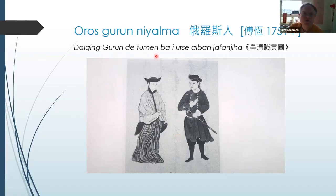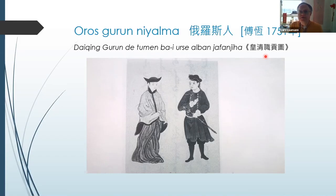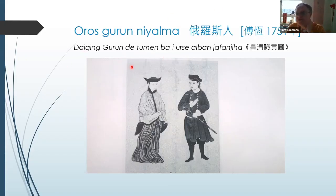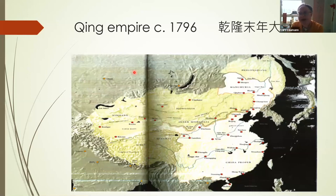'Daichingurun tumen ba iurse alban jafanjiha' — in a somewhat simplified form in Chinese, this is referred to as the illustrated book of tributary peoples to the great Qing country. 'Daichingurun' is of course a term being formed precisely then. I'm going to give you a map version of this and a very brief explanation of how we get to the Qing in the first place.